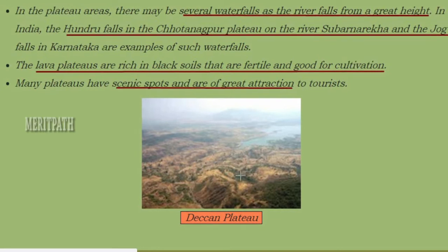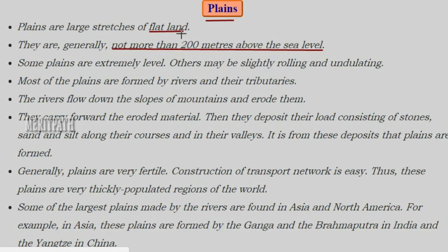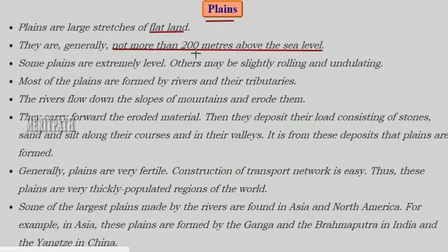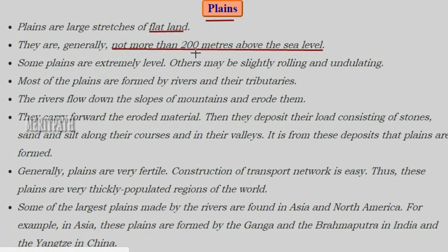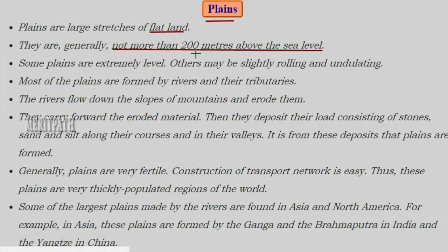In this image you can see the Deccan Plateau of India. Now, talking about plains — plains are large stretches of flat land not more than 200 meters above sea level, so they are at a much lower height compared to plateaus and mountains. Some plains are almost at a very low level, and some are rolling or undulating plains.